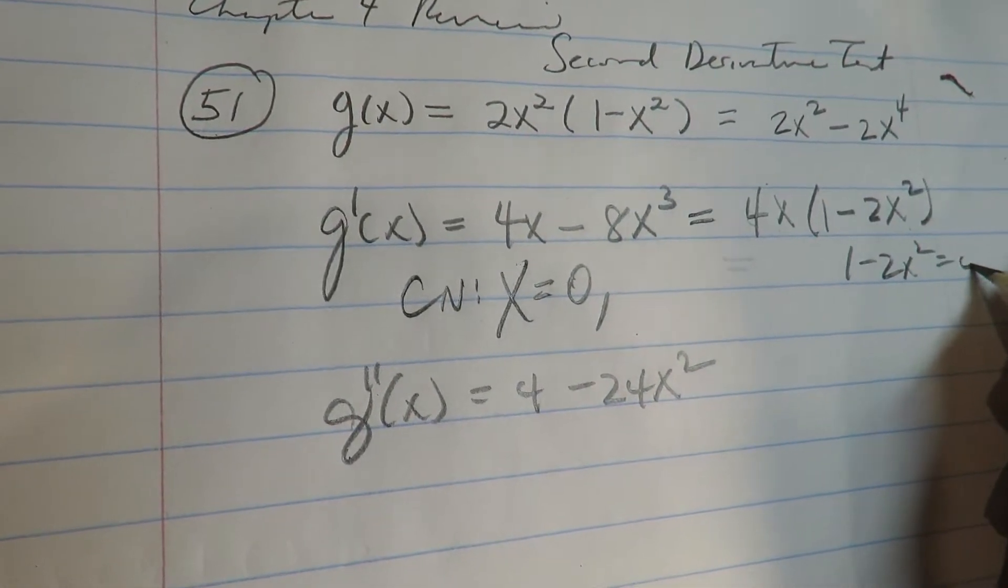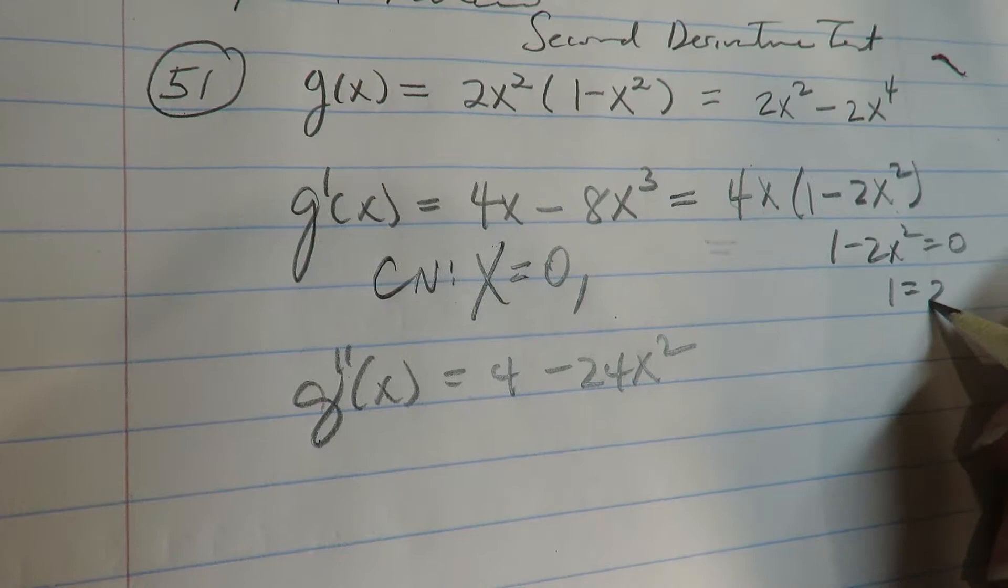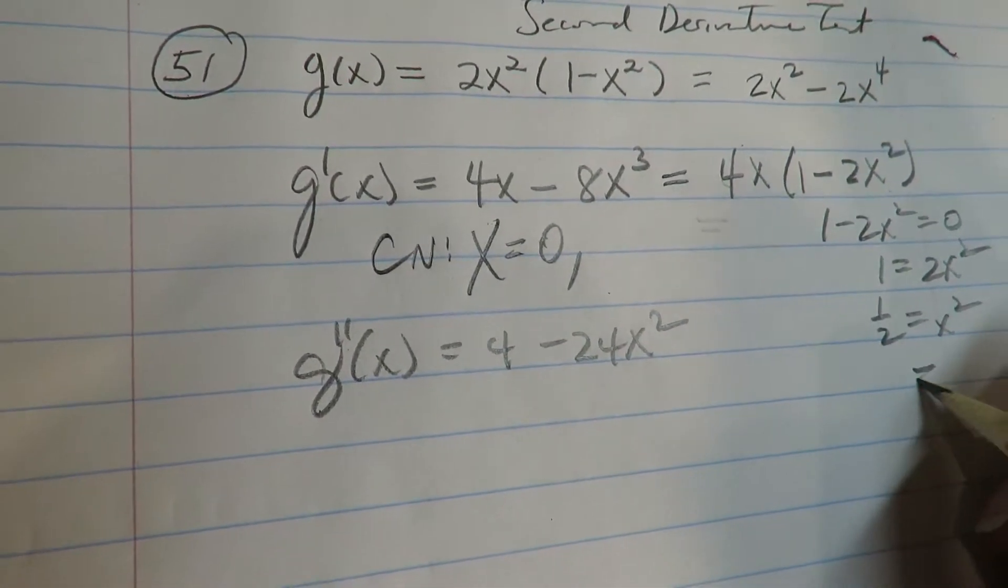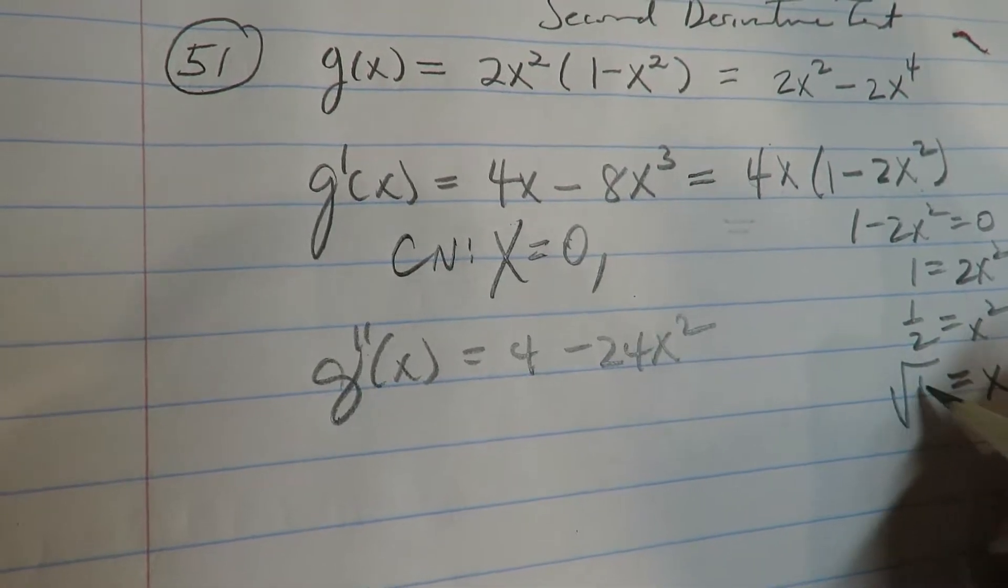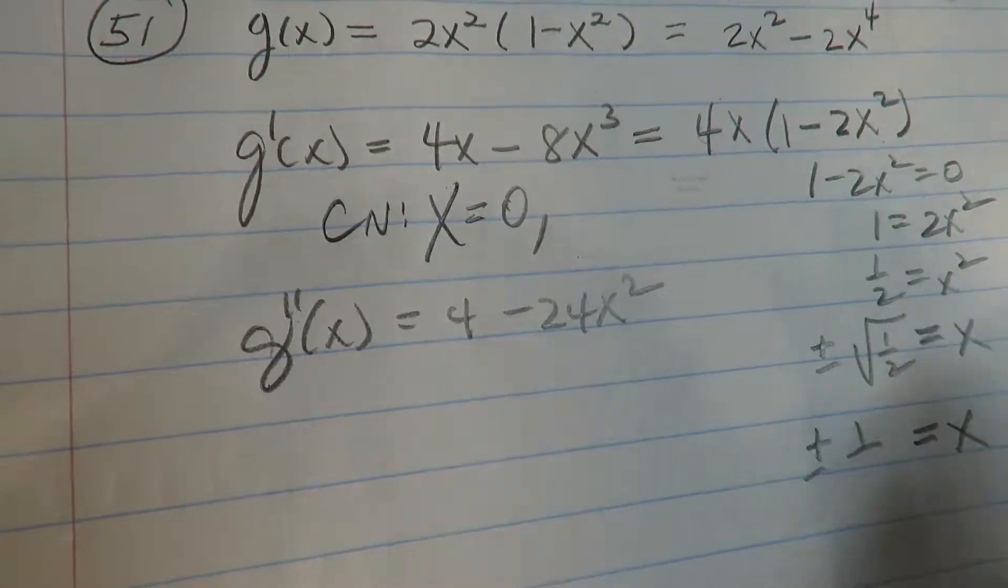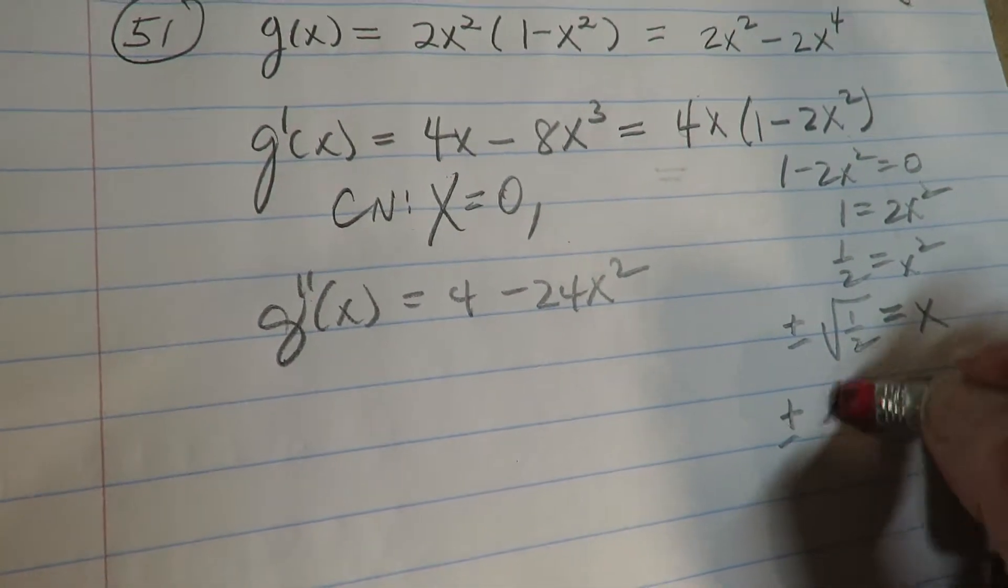do 1 minus 2x² equals 0, or 1 equals 2x². We'll divide the 2 off, we'll take the square root, so x is going to equal—if I just simplify that—that's √2 over 2, if you want it rationalized.